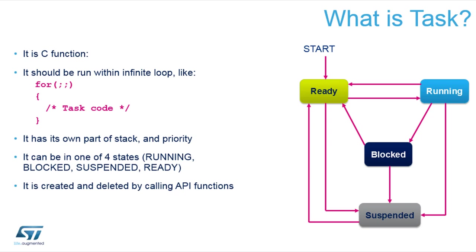Each task can operate in four different states. When it is created, it becomes ready — meaning such a task is able to be executed and the scheduler can pick it up. However, when a task with higher priority exists, this task can be put aside and moved back to the ready state. So it goes from ready to running and back from running to ready, and that is the scheduler's decision.